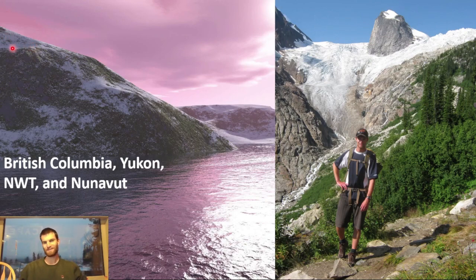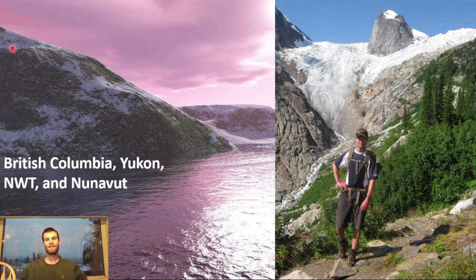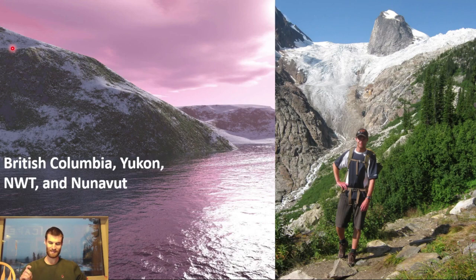This is part two of the series on GeoGuessr Tips for Canada. In part one, I outlined the series and gave an introduction to basic Canada meta. But if you're already pretty familiar with Canada, I think you can get a lot out of this video without seeing part one. Today we're going west with a focus on British Columbia, as well as covering the basics for the Northern Territories. And we're doing it on location in British Columbia, if you notice the scenery change.